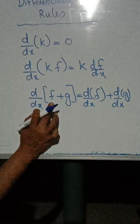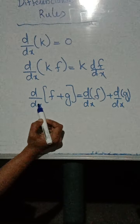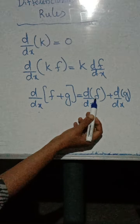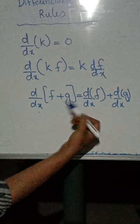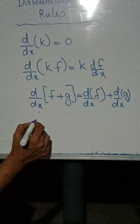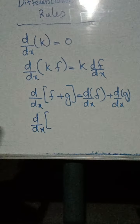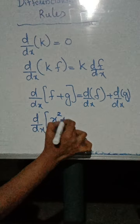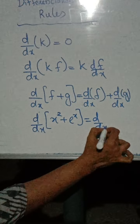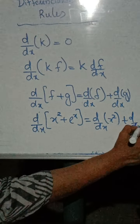The next rule is the derivative of a sum of two functions. D by dx of f plus g equals the sum of the derivatives — that is, d by dx of f plus d by dx of g. For example, d by dx of x square plus e raised to x equals d by dx of x square plus d by dx of e raised to x.